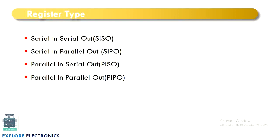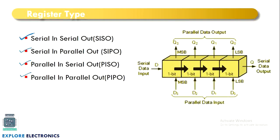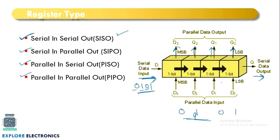There are four different types of shift registers: Serial In Serial Out (SISO), Serial In Parallel Out (SIPO), Parallel In Serial Out (PISO), and Parallel In Parallel Out (PIPO). In serial input, data like 0101 is given one bit at a time. In parallel input, all bits are loaded simultaneously to all four flip-flops, and output can also be taken either serially or in parallel.